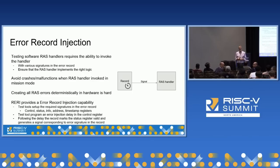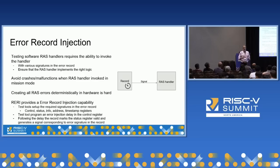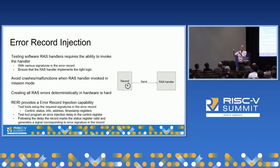Q: Looking to the future, do you see extensions addressing functional safety requirements? A: Yes, as is true with most new RISC-V standards, the goal is to establish a base standard without trying to address all possible needs at once. It's then up to interested parties to develop further standards for FUSA applications by forming a task group within the RISC-V community. It's membership-driven.